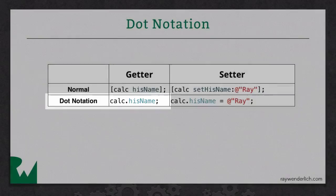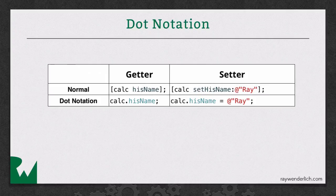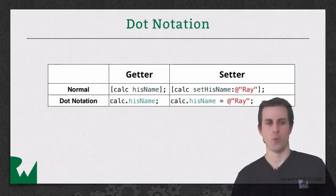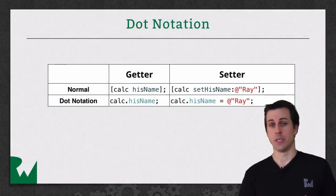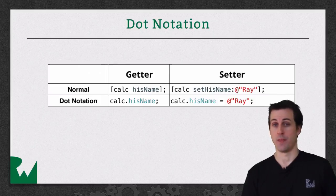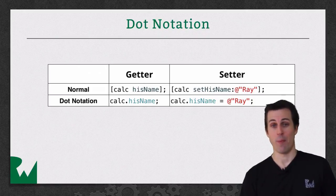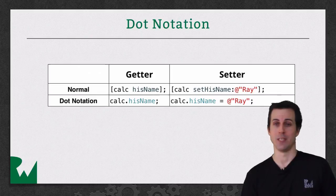And similarly, setters are the same way. Instead of calling calc set his name manually, you can take a little shortcut and say calc dot his name equals whatever. And the compiler will just rewrite it, they're exactly the same. So, in my opinion, I like using dot syntax as much as possible because I think it makes your code cleaner and easier to read. But just be careful. It's good practice only to use the dot notation for actual properties and calling the getters and the setters on the properties. It's not good to use it for regular methods that happen to look like properties.